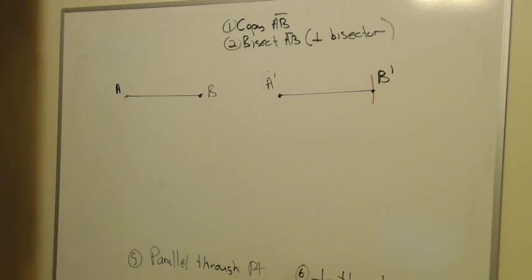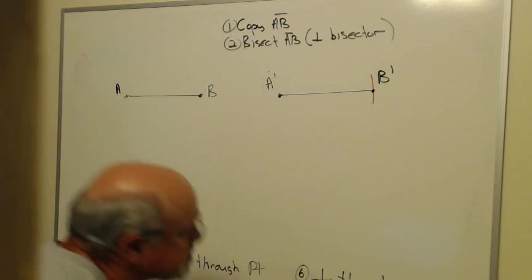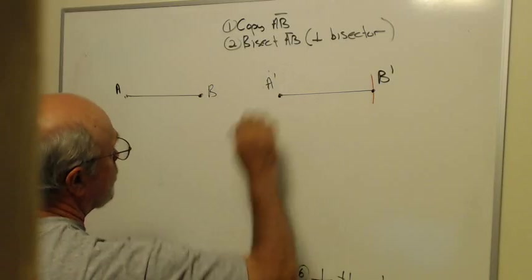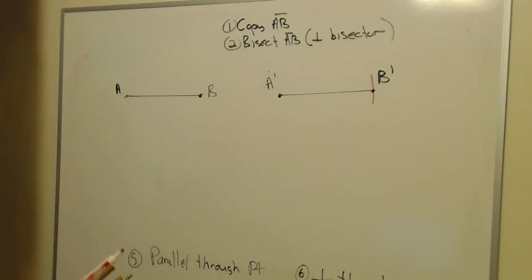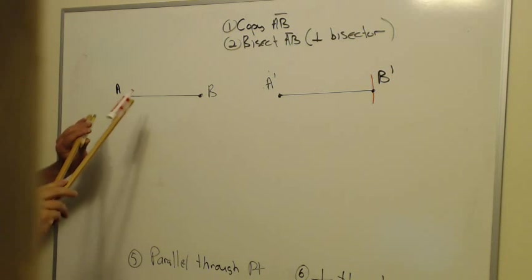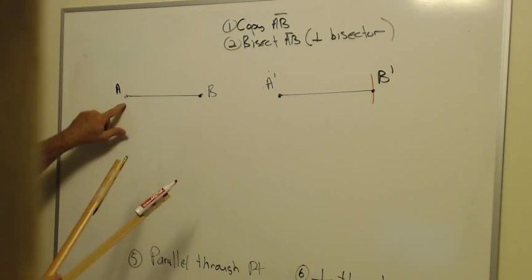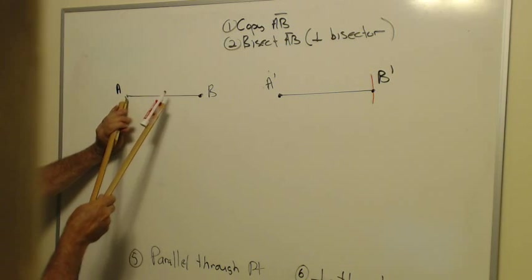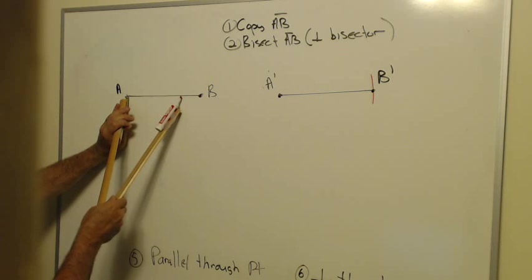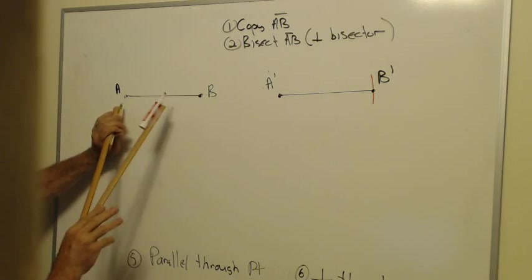The next thing we're going to do is bisect this segment. In fact, we'll be performing the perpendicular bisector of it. I'm going to take my compass, put the point end on A, and stretch the pen so it goes a little more than halfway, maybe three-fourths away from A to B. It doesn't have to be exact.